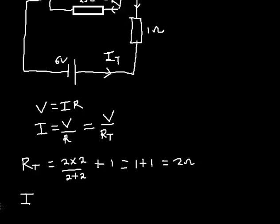Now I can find my circuit current. The voltage is 6 volts and the total resistance is 2 ohms. So the current I = V/R = 6 / 2 = 3 amperes. That's the total circuit current — and since the 1-ohm resistor carries all of it before the split, the current through the 1-ohm resistor is 3 amperes.